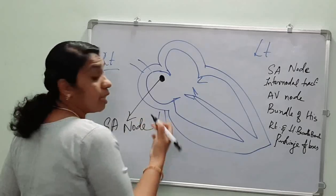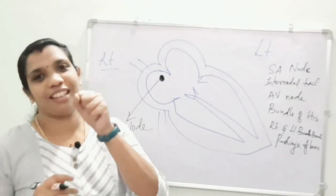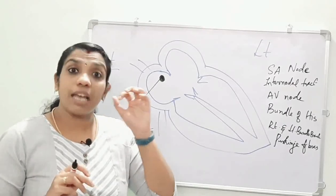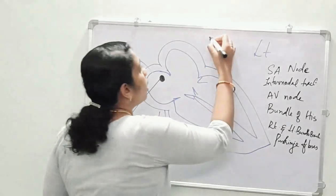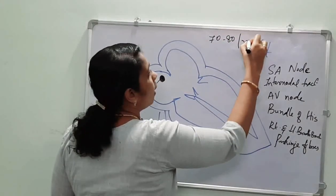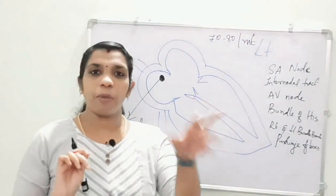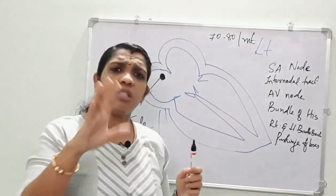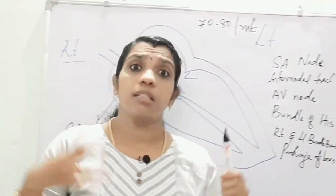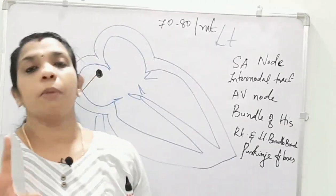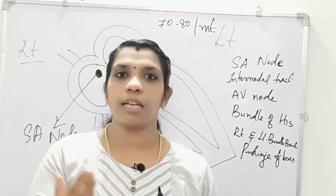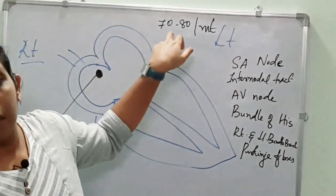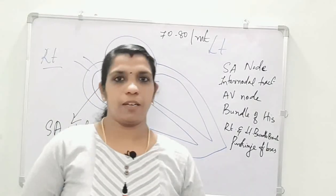The SA node is also known as the pacemaker of the heart because it is self-excitatory. It is made up of specialized cardiac muscles which are self-excitatory, and the rate of impulses produced by this SA node is about 70 to 80 impulses per minute. The rhythmic contraction ranges 70 to 80 beats per minute. According to Guyton and Hall's Textbook of Medical Physiology, 11th edition, the rate of impulses produced by the SA node is 70 to 80 per minute.